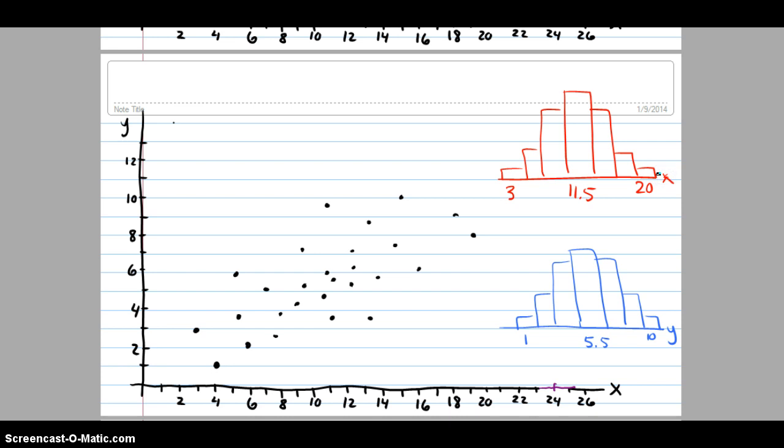Now the empirical rule says 95% of your data lies within two standard deviations. Let's count how many data points we have here.